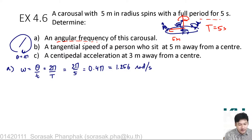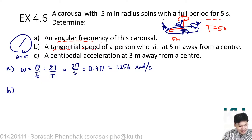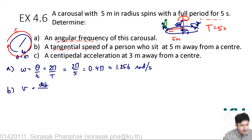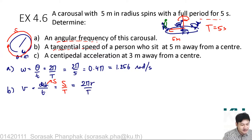That is the angular frequency of this carousel. For part B, to determine the tangential speed of a person sitting on the carousel at 5 meters away from the center, we use the distance the carousel travels in circular motion divided by time. The total path length s divided by the period t gives 2πr over t.